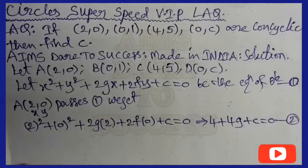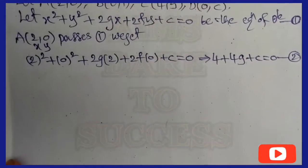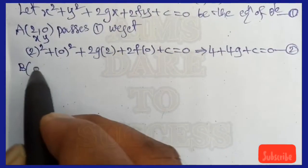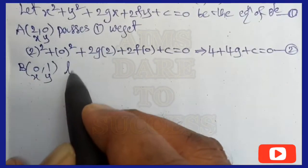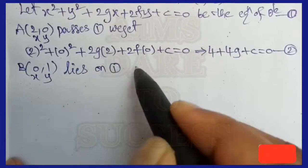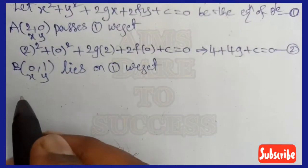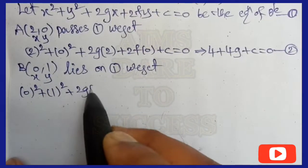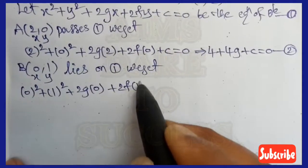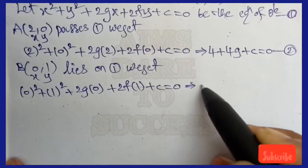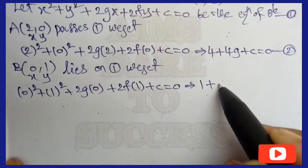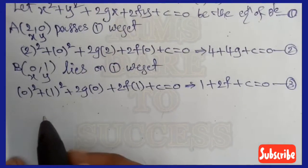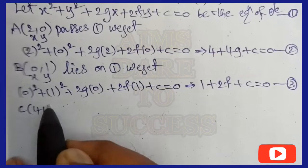Next, second point B(0,1) — substitute in Equation 1 where x = 0, y = 1. We get: 0² + 1² + 2g(0) + 2f(1) + c = 0, which simplifies to 0 + 1 + 0 + 2f + c = 0, giving 1 + 2f + c = 0. Let this be Equation 3.